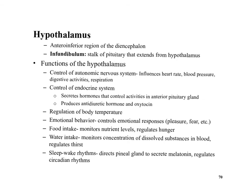The hypothalamus is at the anteroinferior region of the diencephalon — hypo means under the thalamus. It has the infundibulum, a funnel that channels hormones from the hypothalamus to the pituitary gland. The hypothalamus actually controls much of the pituitary, and it also controls much of your autonomic nervous system, which we'll talk about next week.